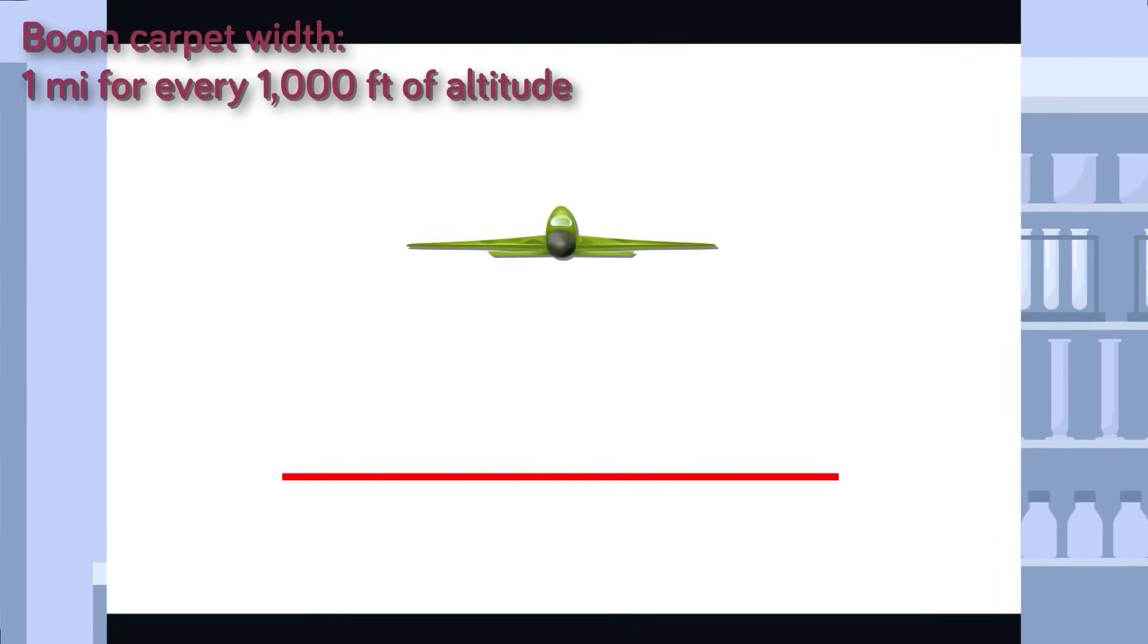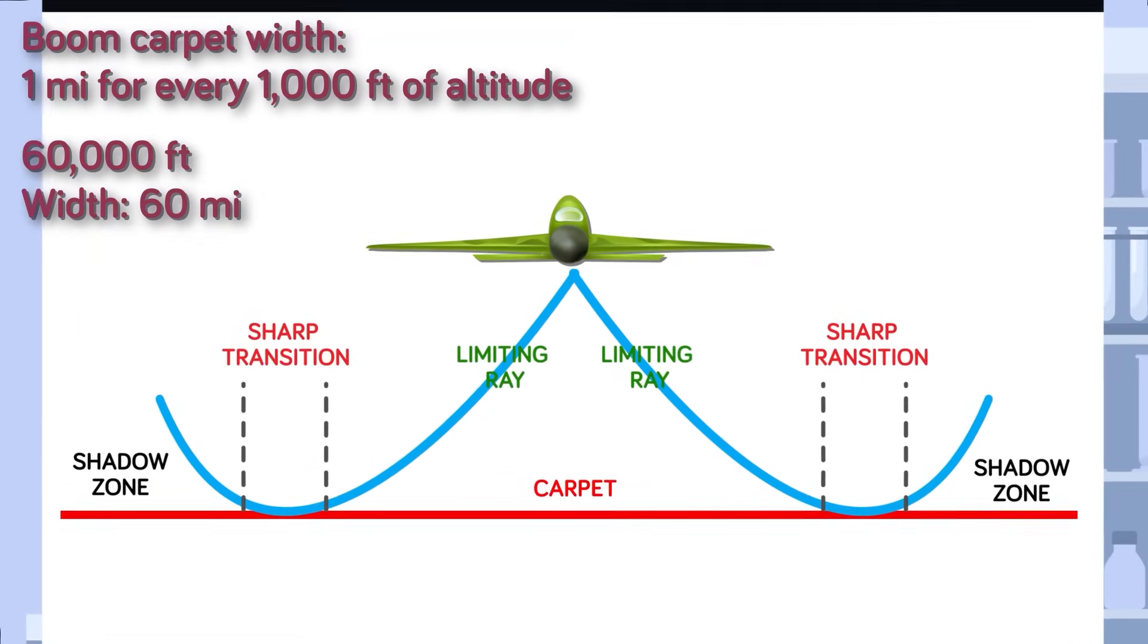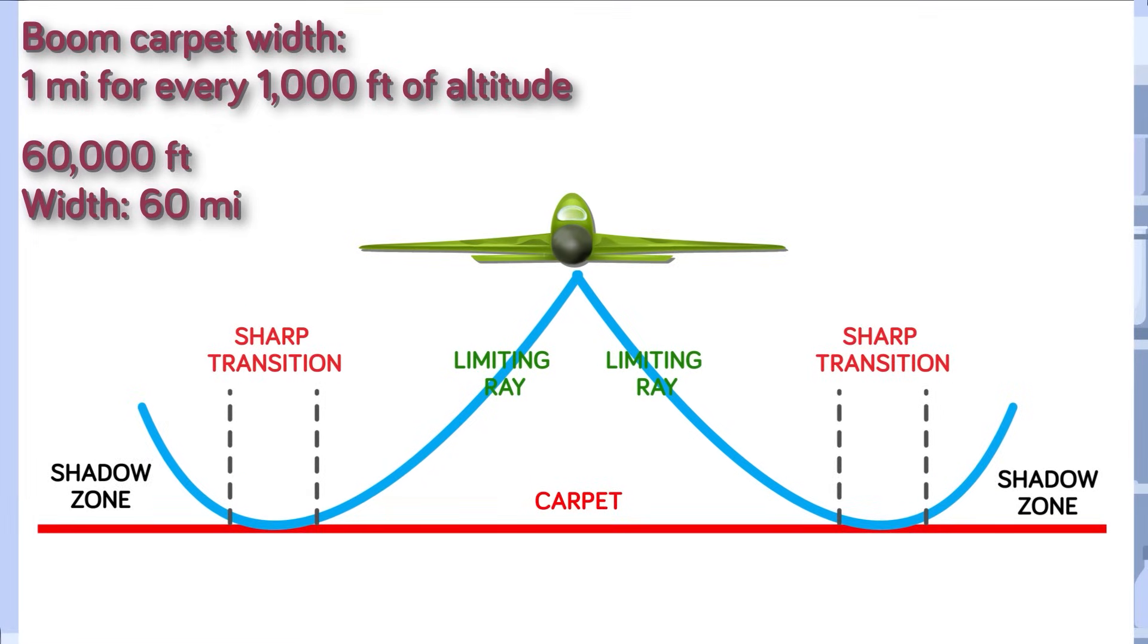The width of the boom carpet is about 1 mile for every 1,000 feet of altitude. This means that if a supersonic jet is flying 60,000 feet, its boom carpet will be about 60 miles in width.